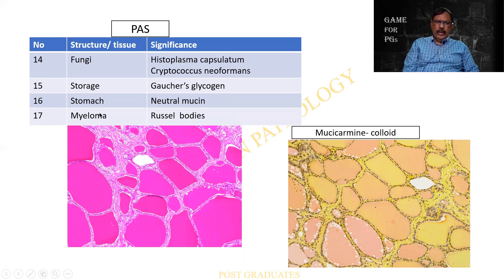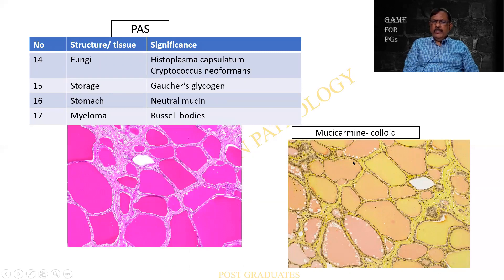This is the colloid of the thyroid, which is being stained positive by the PAS. And look at this mucicarmine, which is also a stain for glycogen — it is showing a variable colour: there is a pink colour and then there is a yellowish pink colour. It is supposed to be a versatile stain.